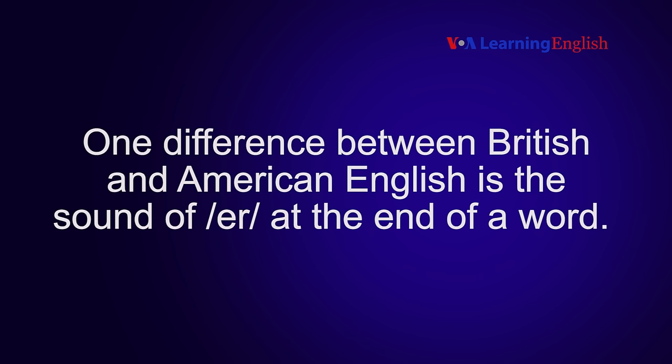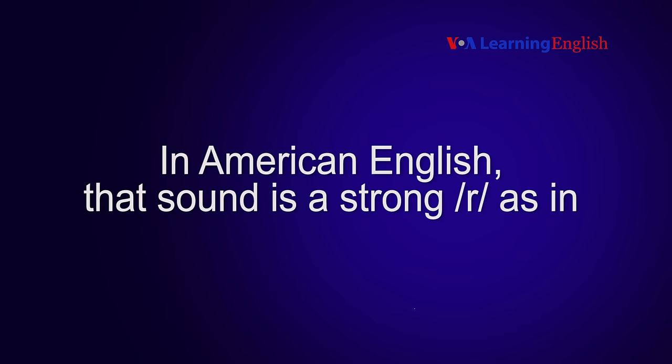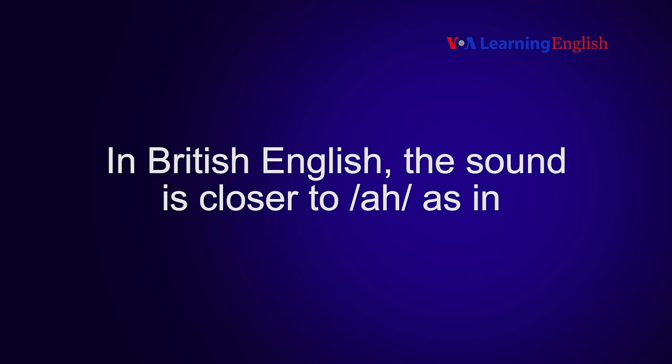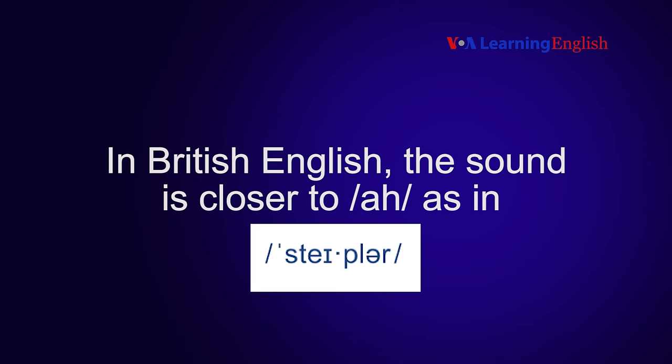One difference between British and American English is the sound of 'er' at the end of a word. In American English, that sound is a strong 'er', as in stapler. In British English, the sound is closer to 'a', stapler.